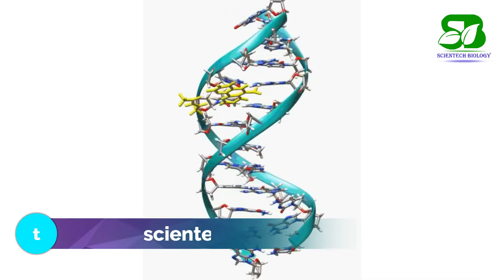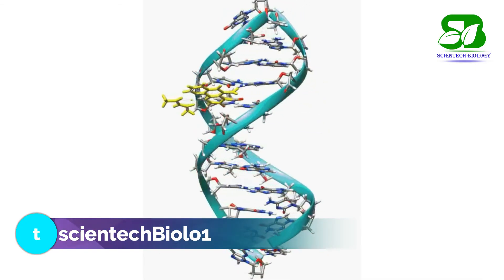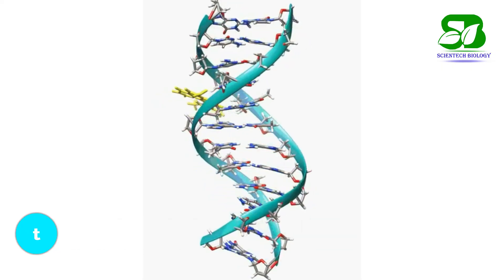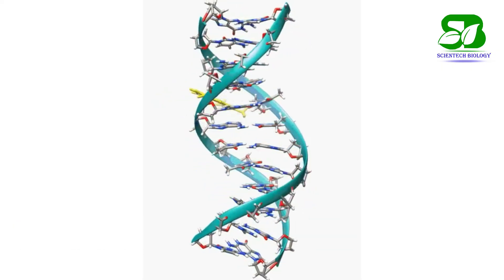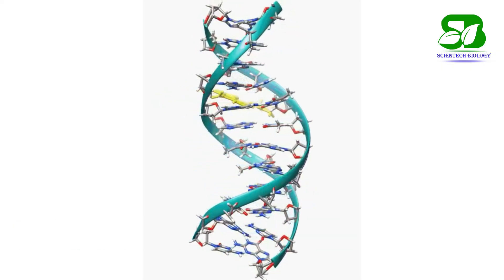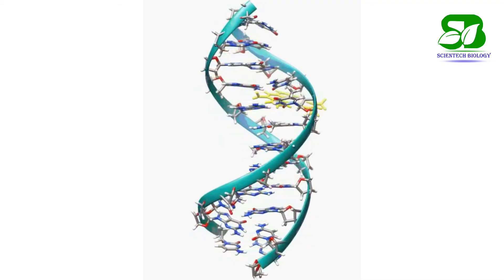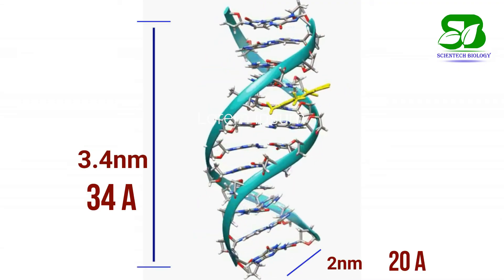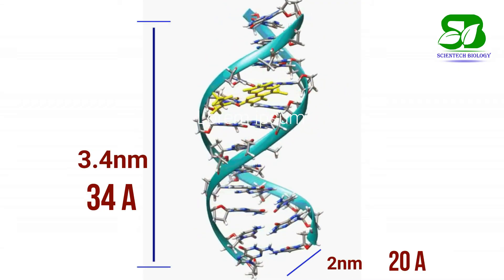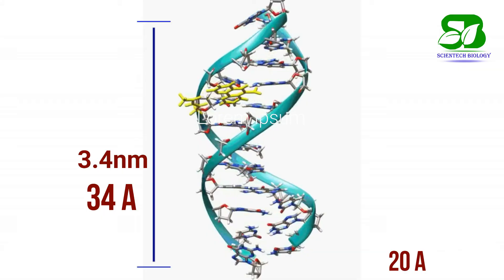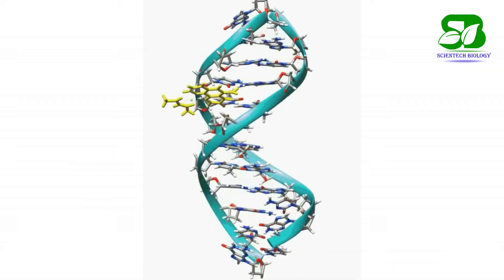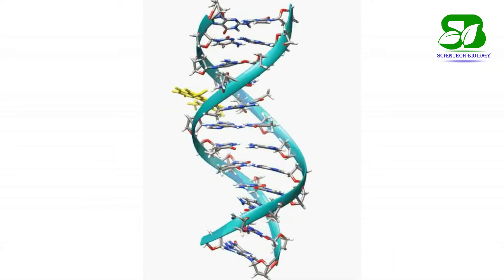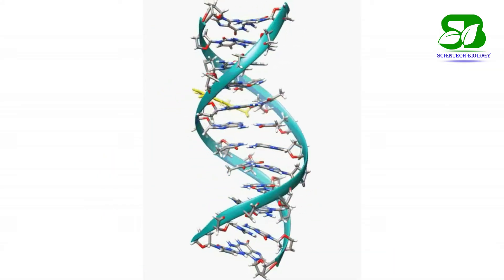The key features of DNA structure are: it is a right-handed double helix in which one complete turn of the helix covers 3.4 nm, and the helix diameter is 2 nm. There are 10 base pairs present equidistantly.